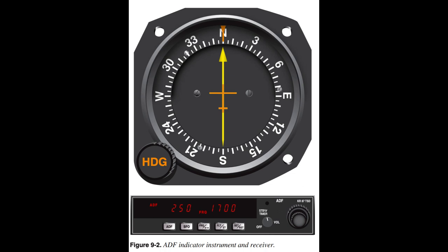ADF Components. The airborne equipment includes two antennas, a receiver, and the indicator instrument. The sense antenna (non-directional) receives signals with nearly equal efficiency from all directions. The loop antenna receives signals better from two directions (bi-directional). When the loop and sense antenna inputs are processed together in the ADF radio, the result is the ability to receive a radio signal well in all directions but one, thus resolving all directional ambiguity. The indicator instrument can be one of four kinds: fixed card ADF, rotatable compass card ADF, or radiomagnetic indicator (RMI) with either one needle or dual needle.